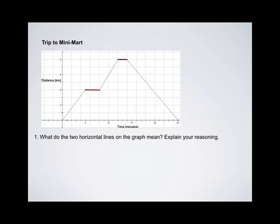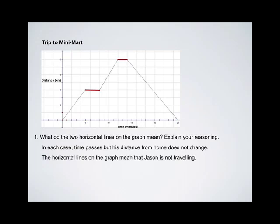The two horizontal sections are indicated here. In each case, time passes, but his distance from home does not change. The horizontal lines on the graph mean that Jason is not traveling at all.